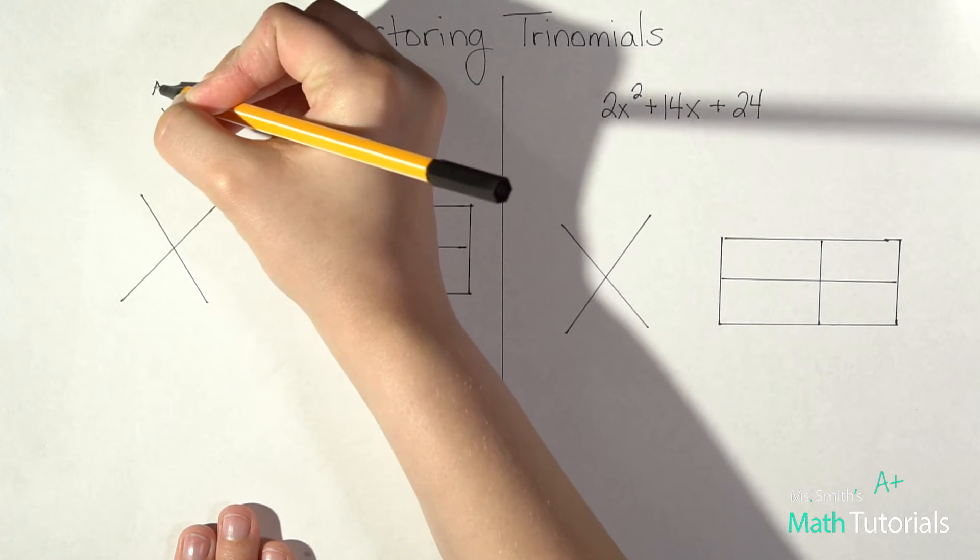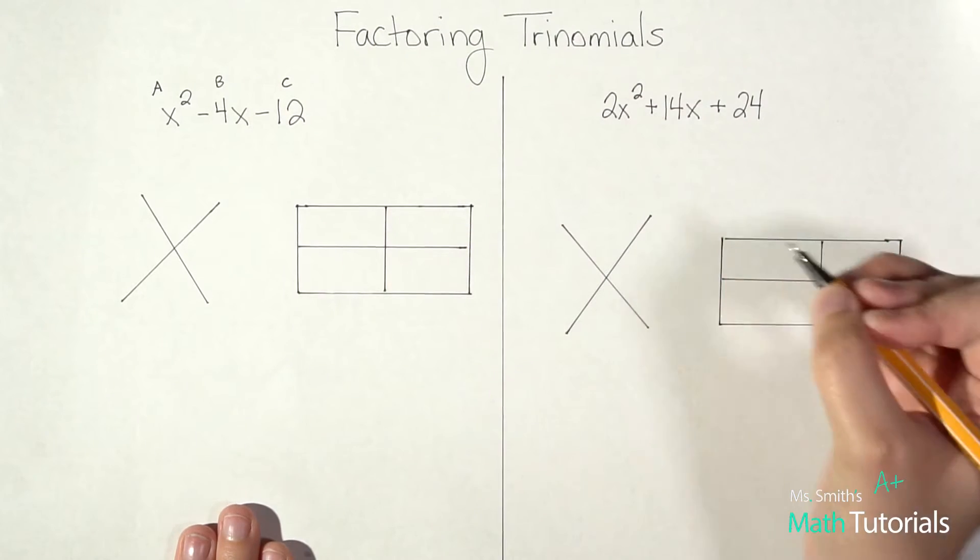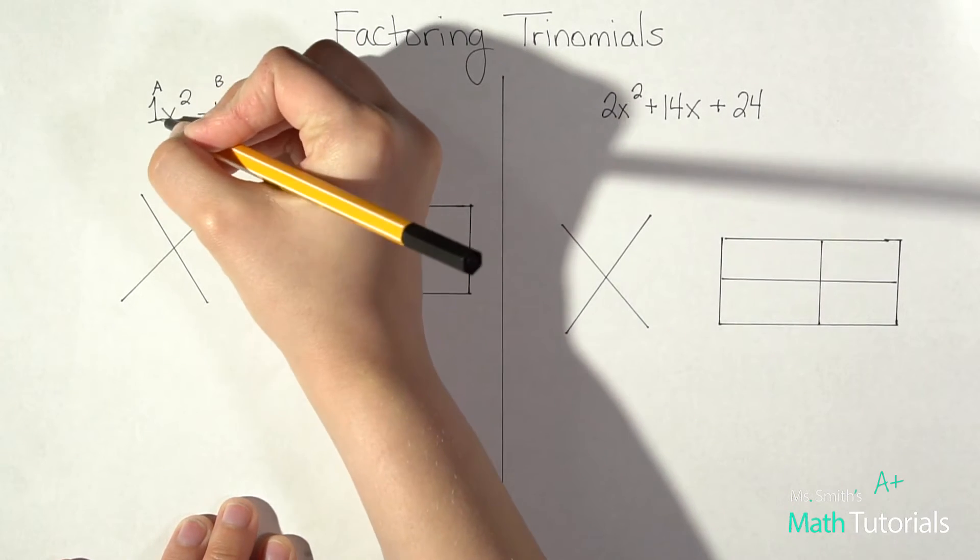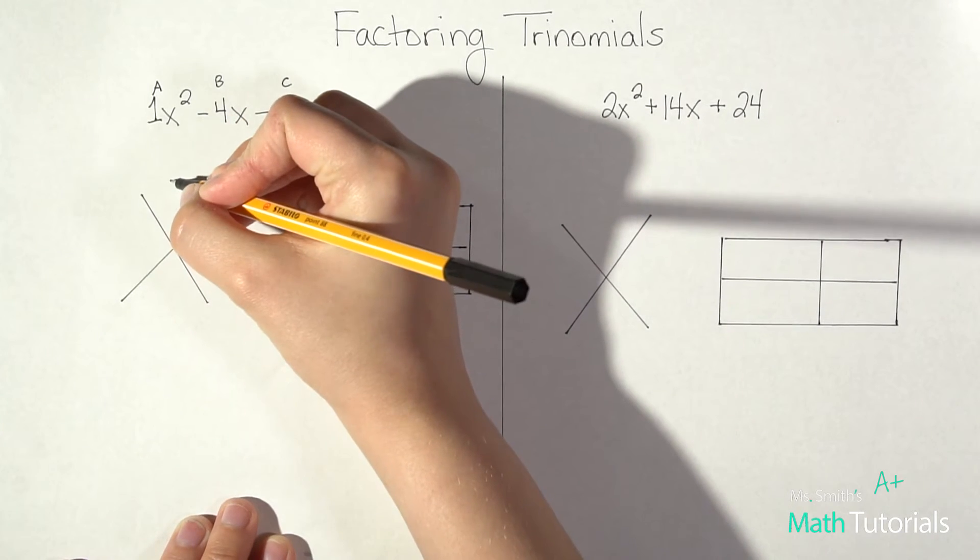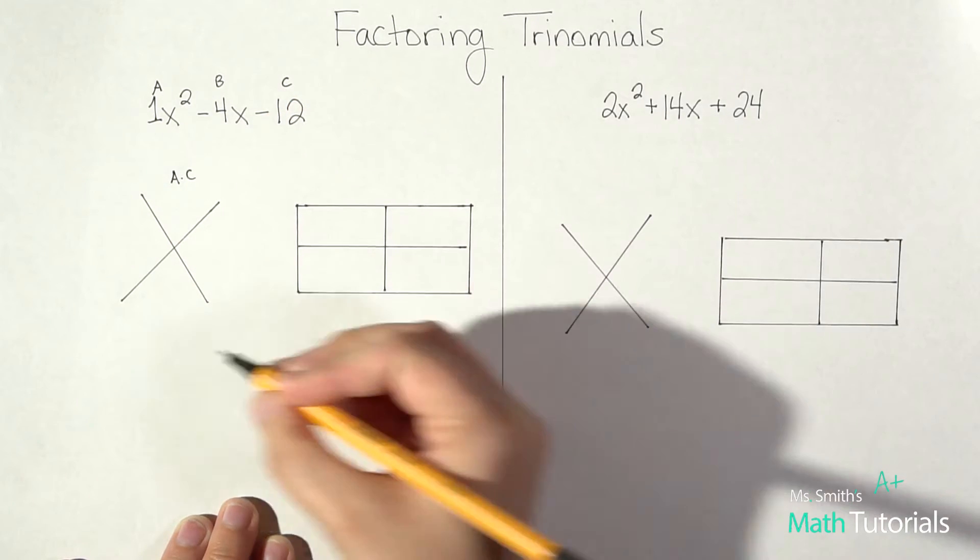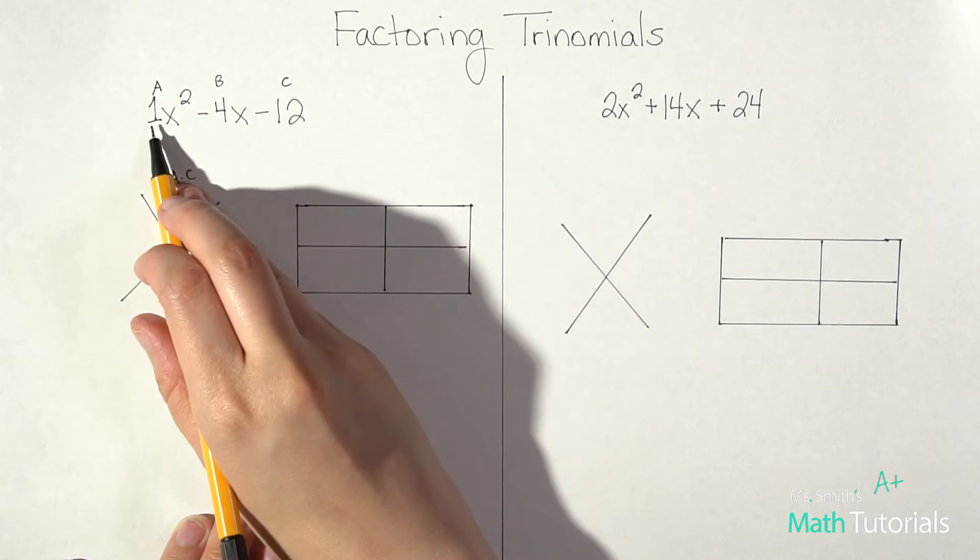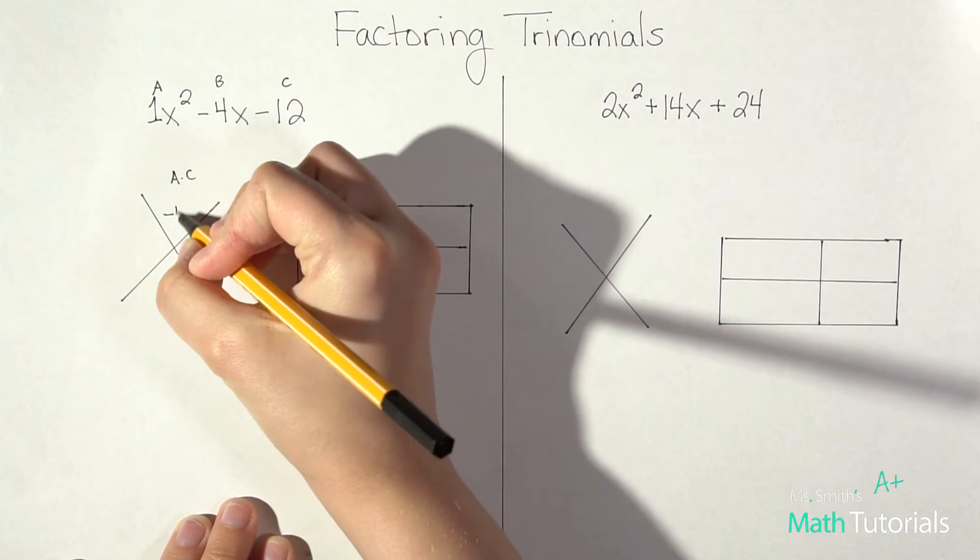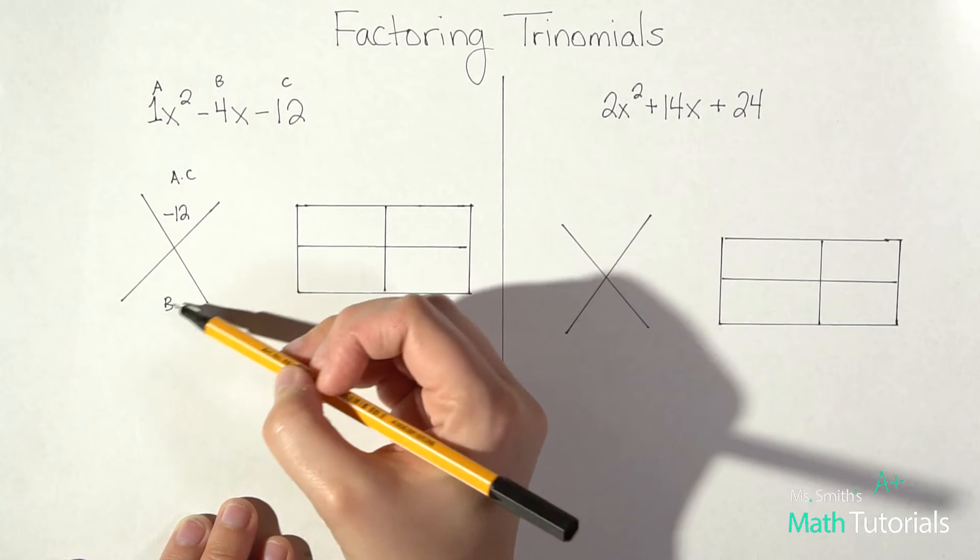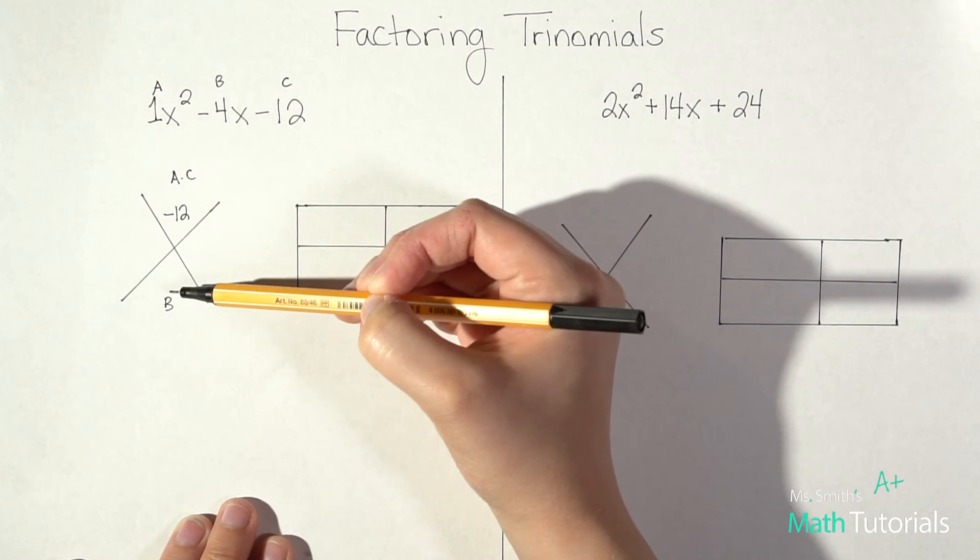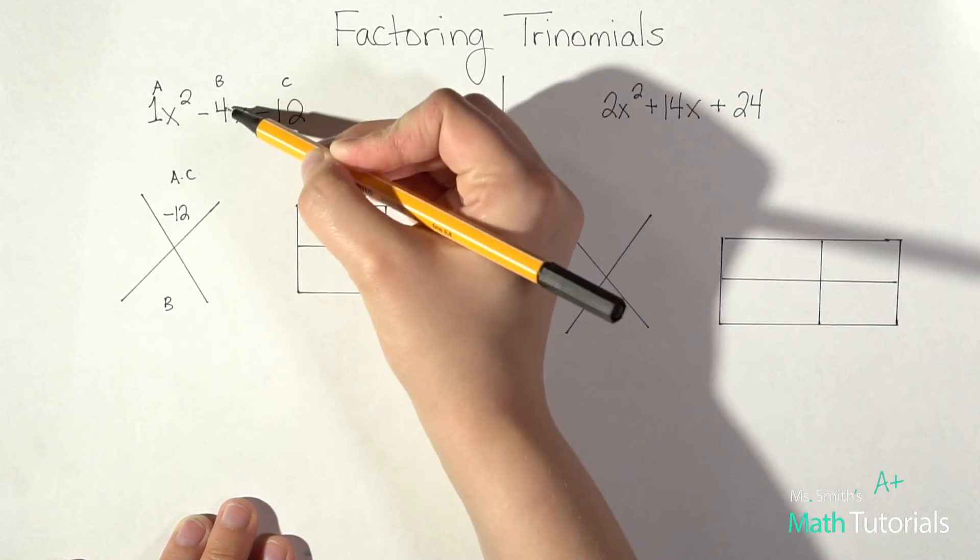So what that means is we label our A is our first term, B is our second term, C is our third term. And that A, that's an understood 1 right there. So if you remember in this X box, what goes up top is A times C, and what goes in this bottom is B. So A times C, so 1 times negative 12 is negative 12. Notice I didn't multiply that X squared. I don't want any letters in this box. I'm going to have a number here, here, here, and here. No letters. Just numbers. And then what goes down here is my B value, which is a negative 4.